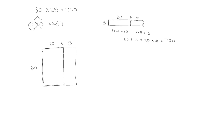So here we have 30 times 20, which in unit form would be 3 tens times 2 tens. 3 times 2 is 6, and 10 times 10 is 100, so we have 6 hundreds, which in numerical form would be 600.